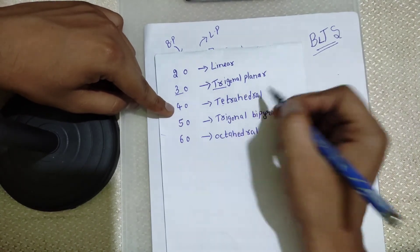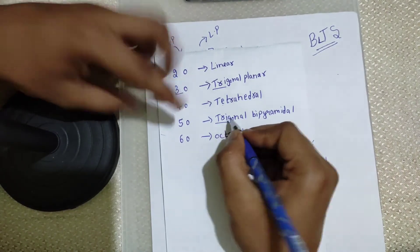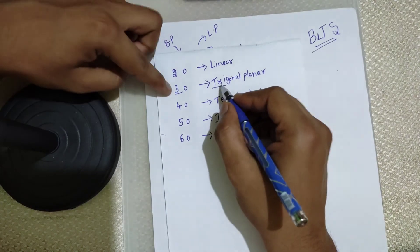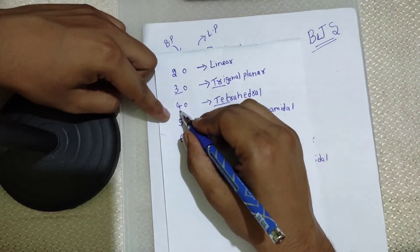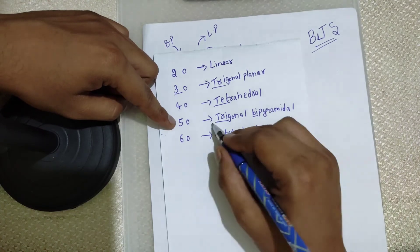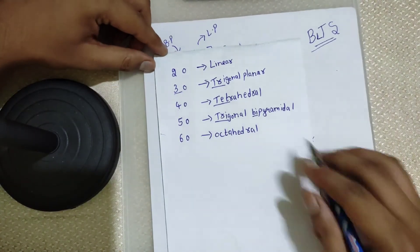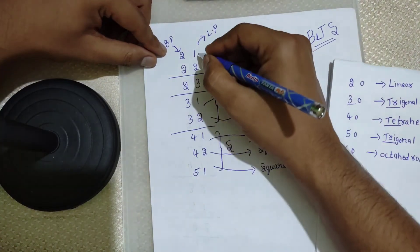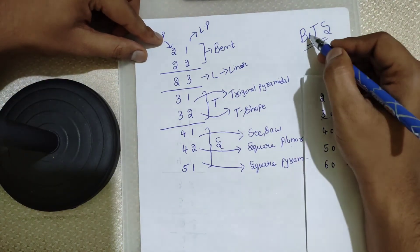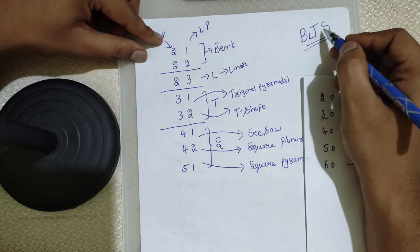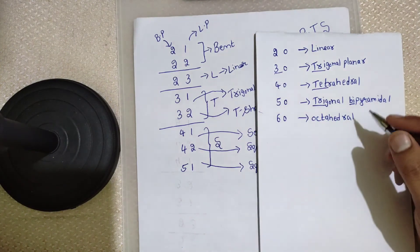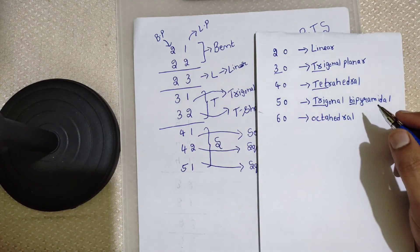Here's how to remember: tri means three, so trigonal planar; tetra means four, so tetrahedral. For five, tri plus bi equals penta — three plus two is five — so trigonal bipyramidal. That's the complete trick for both types of molecules: those with lone pairs using the BLTS mnemonic, and those with zero lone pairs using the prefix hints. Thank you — if you liked the video, don't forget to hit like and subscribe.